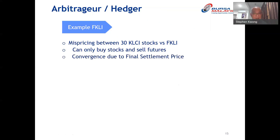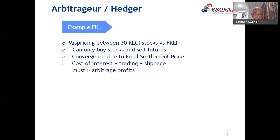If there is mispricing and the stocks are too low, you can buy them and then sell the futures, making the difference. And as you know, if there's a mispricing, towards the end of the contract period the gap between the underlying and the futures contract will converge. There are also costs involved: cost of interest, trading costs, and slippage. These costs must be lower than the arbitrage profit for the trade to make sense.